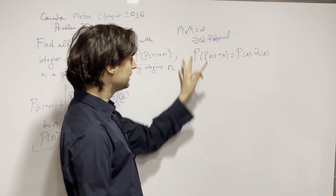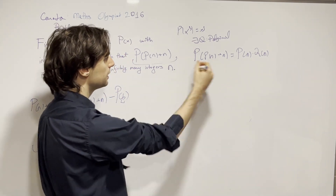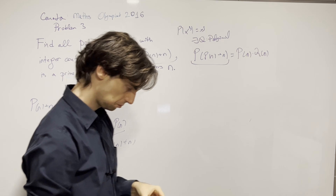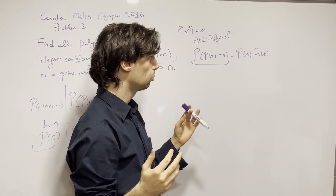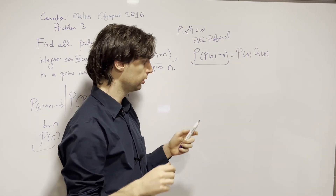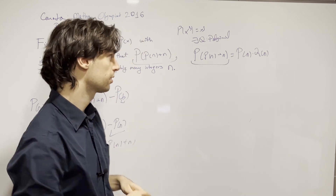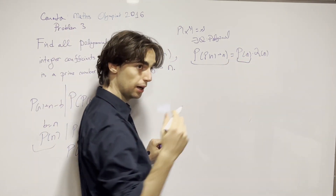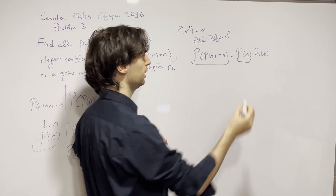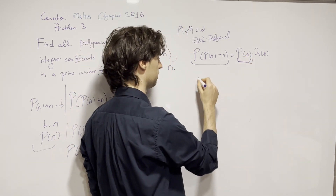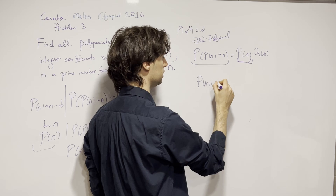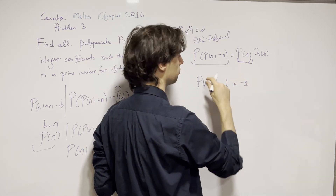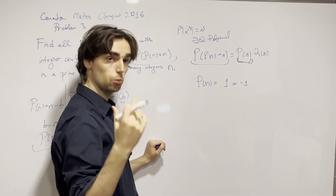With this in mind, we have P(P(n)+n) is a prime for infinitely many n. So one of two things is going to be true infinitely often: either P(n) is 1 or P(n) is −1 for infinitely many n.